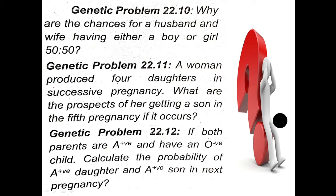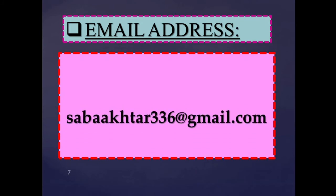Problem 22.12: If both parents are A-positive and have an O-negative child, calculate the probability of an A-positive daughter and an A-positive son in the next pregnancy. You have to solve this problem in your notebooks and send it to me at my email address: sabahakhtar336@gmail.com.